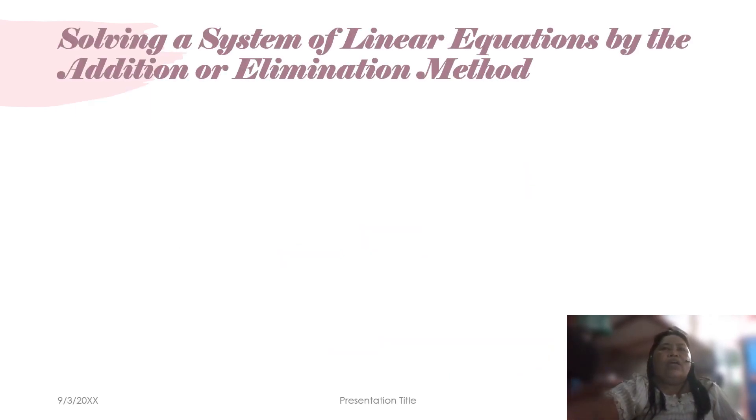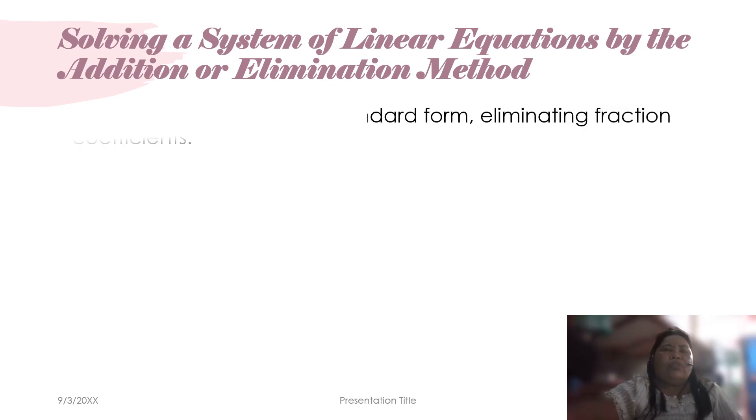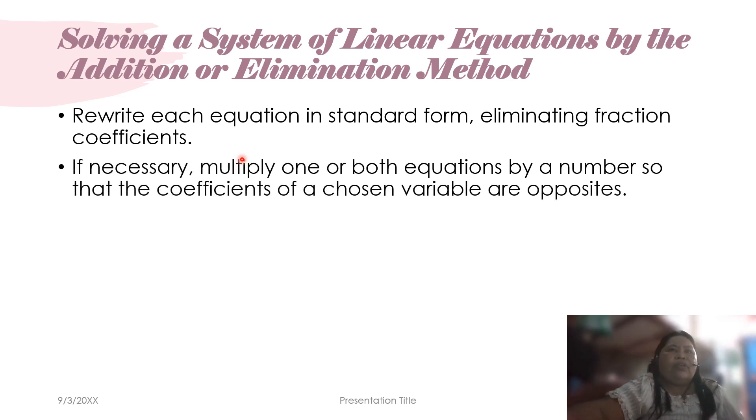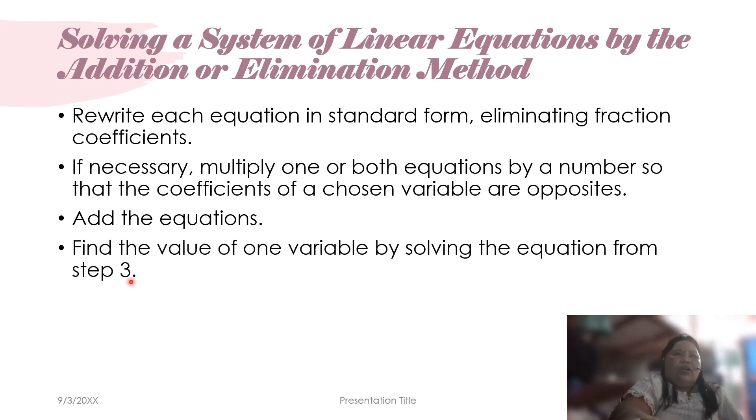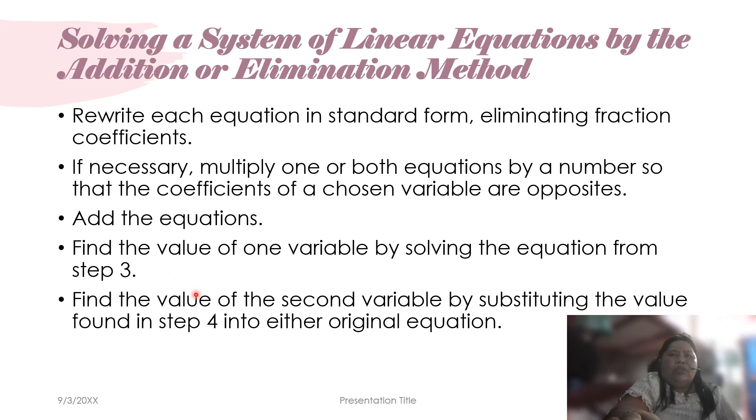Next, let's try to solve the system of equations by addition or elimination method. So these are the steps. First, rewrite each equation in standard form, eliminating fraction coefficients. If necessary, multiply one or both equations by a number so that the coefficients of the chosen variable are opposites. Then add the equations. Find the value of one variable by solving the equation from step 3. And find the value of the second variable by substituting the value found in step 4 into either original equation. Check the proposed solution in the original equations.